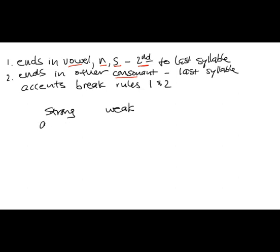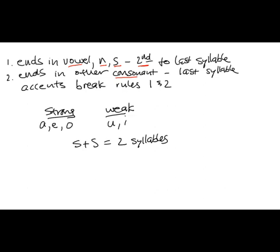The strong vowels are A, E, and O. The weak vowels are U and I. A strong vowel always will be one syllable. So, for example, if you have a word in which you have a strong vowel right next to another strong vowel, that would be two syllables. Each strong vowel would receive one beat.